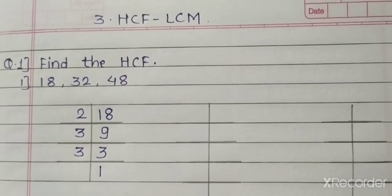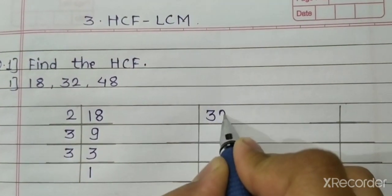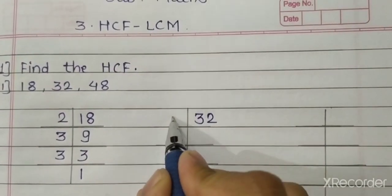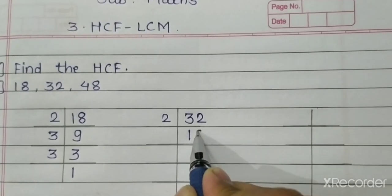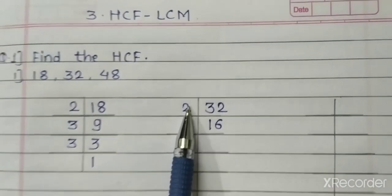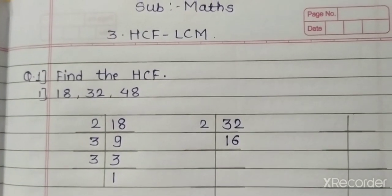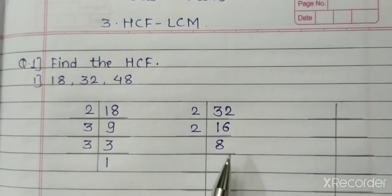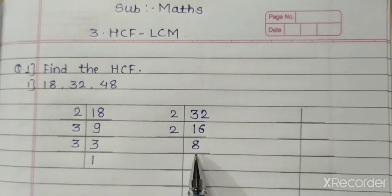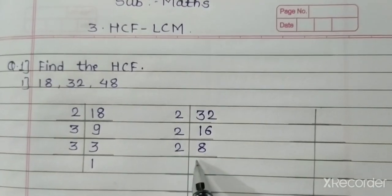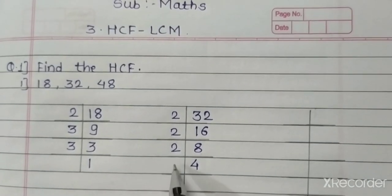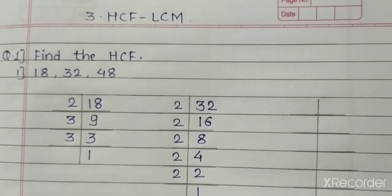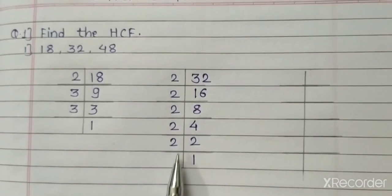Now find the prime factors of 32. Write the number 32. The number 32 can be divisible by 2. Two 16s are 32. Write here the number 2 and the quotient 16. This 16 is also divisible by 2. Two eights are 16. Write here 8. This 8 is divided by 2 — two fours are 8. Then two twos are 4. Then two ones are 2. All these are the prime factors of 32.